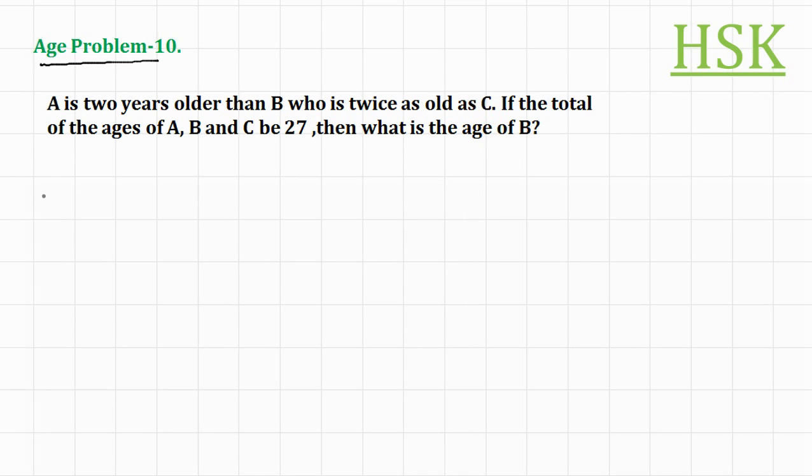So we start like this, that since B is twice as old as C, if the age of C is equal to X, then age of B would be equal to 2X.